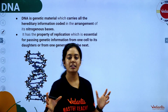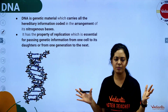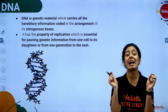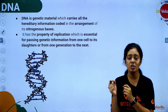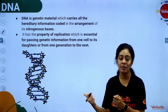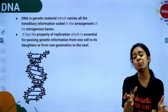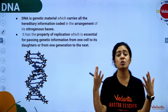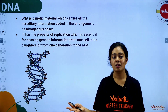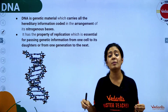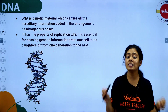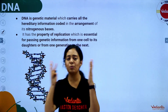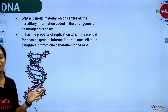DNA is the genetic material — it carries all the genetic information. DNA has the property of replication — it is autocatalytic. DNA is responsible for the transmission of characters from parents to offspring. That's why we look like our parents — we carry their hereditary information in our DNA.